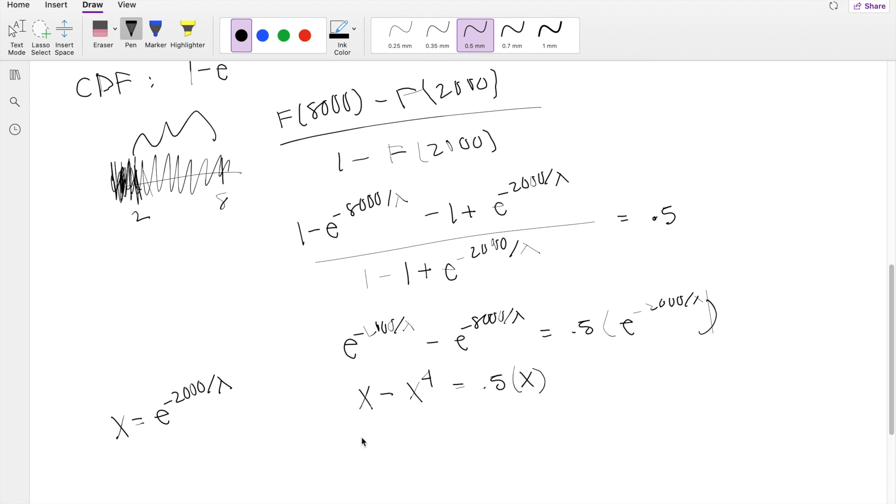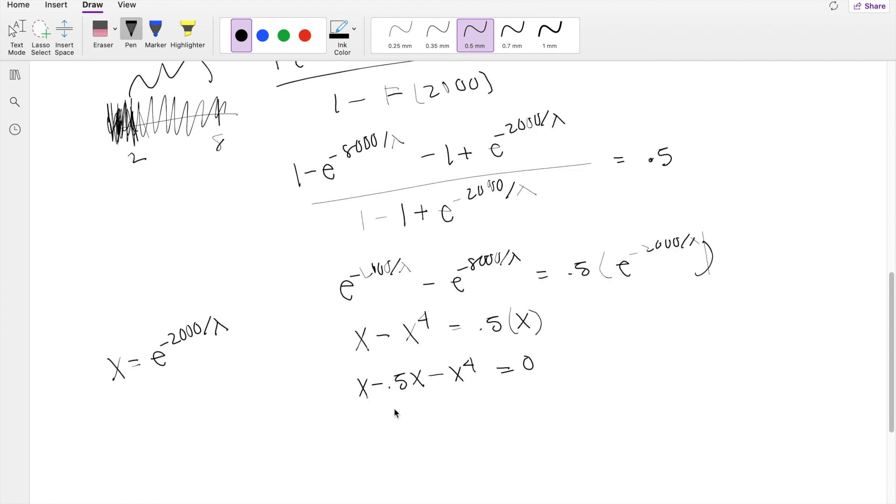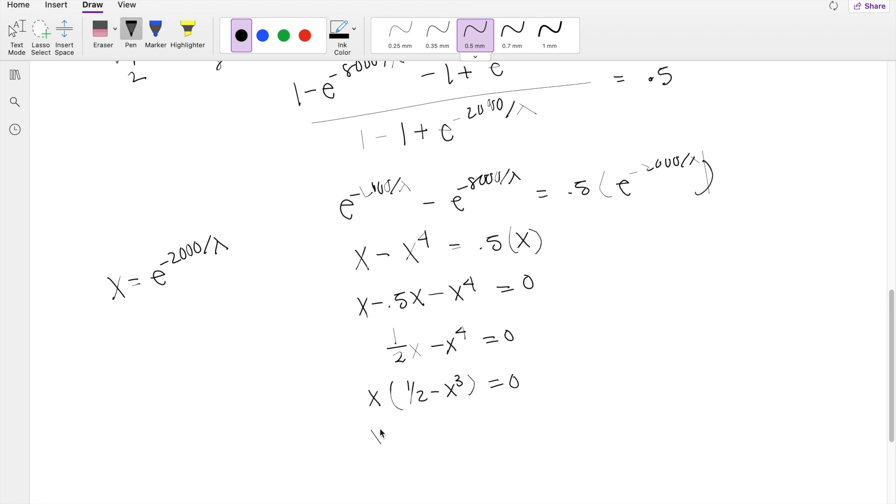So then simplifying this, you get X minus 0.5X minus X to the fourth is equal to 0. One half X minus X to the fourth is equal to 0. Factoring the X out, you get one half minus X cubed is equal to 0. So then your two choices are X is equal to 0 or one half is equal to cube root.